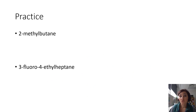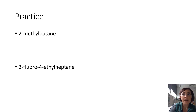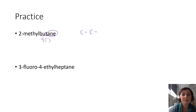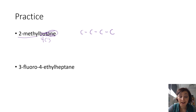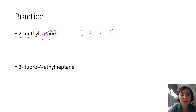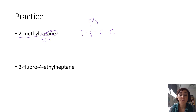Let's do some practice. I'll do the first example since we haven't drawn one with a branch coming off yet. I'm going to start with the parent chain, which is butane — 'but' tells me four carbons and 'ane' tells me all single bonds. So we start with four carbons. What we have left is a methyl group, and since I'm drawing it I can go left to right as long as that methyl group comes off the second carbon. Methyl is a single carbon alkyl group that has hydrogens to complete the octet.